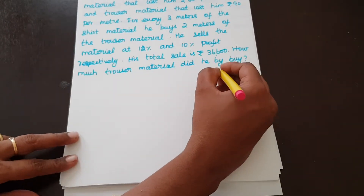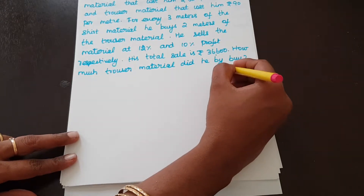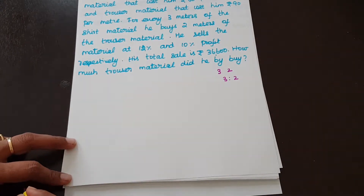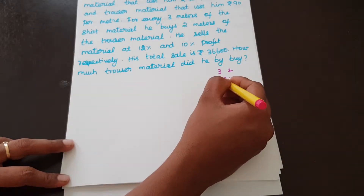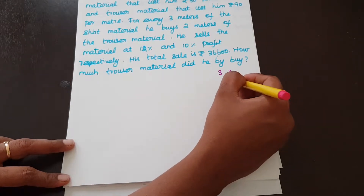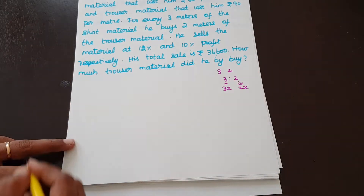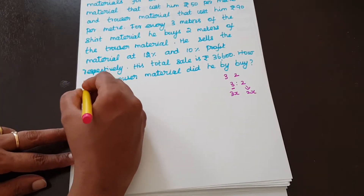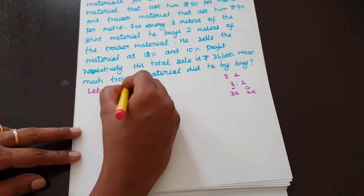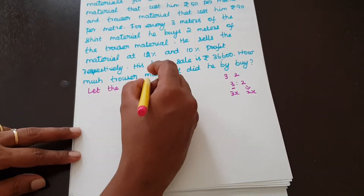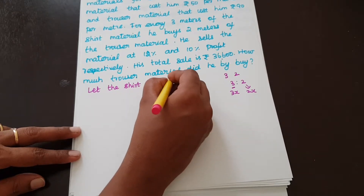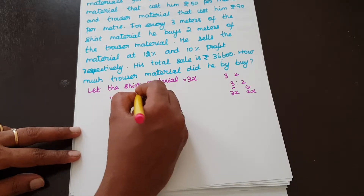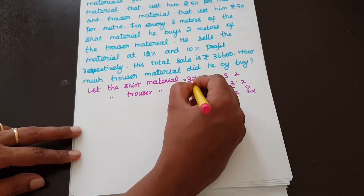So the ratio is 3:2. Let the shirt material be 3X meters and the trouser material be 2X meters.